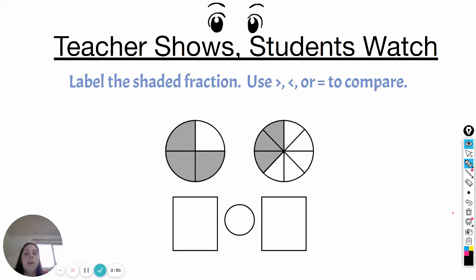I'm going to go to this first picture. It's broken into four pieces, so my denominator is four. One, two, three of them are shaded. So my fraction for that picture is 3 fourths.